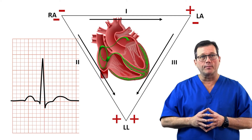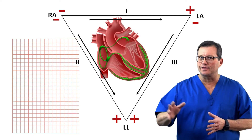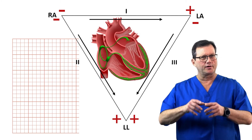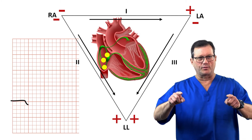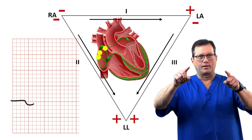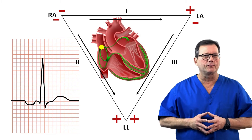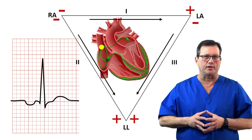Think about a PJC. Now you're going in exactly the opposite direction — you're starting at the AV node and going this way. That's what creates the inverted P-Wave during a PJC.